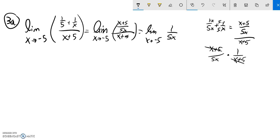So now I can do some direct substitution. I plug in that negative five and I have negative one twenty-fifth.